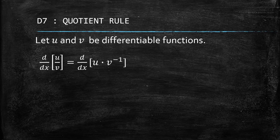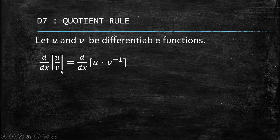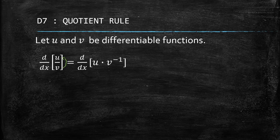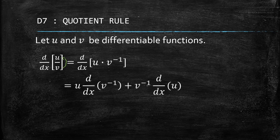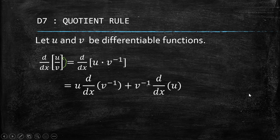We have u over v. Take note that we can write the denominator v as v to the power of negative one. It's a well-known exponential rule that we can rewrite the variable in the denominator by transferring it to the numerator with a negative exponent. Since it's v to the power of one, transferring it above gives v to the power of negative one. Observe that we now have a product rule scenario — we can apply product rule here, where instead of v we have v to the power of negative one.